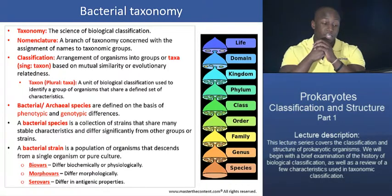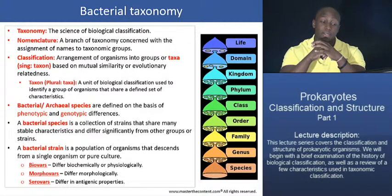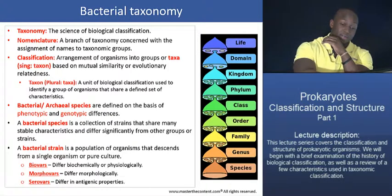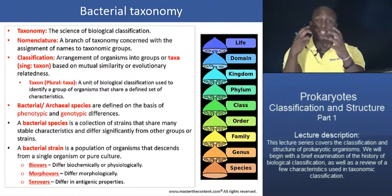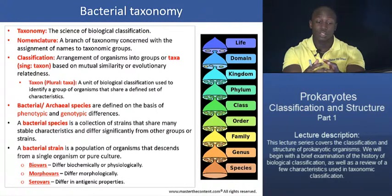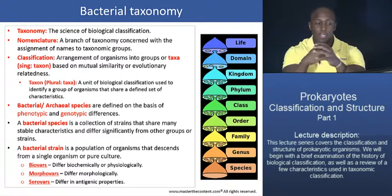Classification, on the other hand, is the arrangement of organisms into what we call taxa, or groups, based on mutual similarity or evolutionary relatedness. You can think of classification as just a way to group or aggregate organisms that share similar characteristics, which makes it easier for us to detect or discern the evolutionary relationships between these organisms.